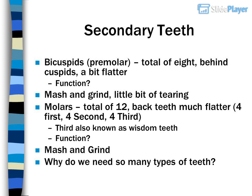Molars — a total of 12, back teeth, much flatter: 4 first molars, 4 second molars, 4 third molars. Third molars are also known as wisdom teeth. Function: mash and grind. Why do we need so many types of teeth?